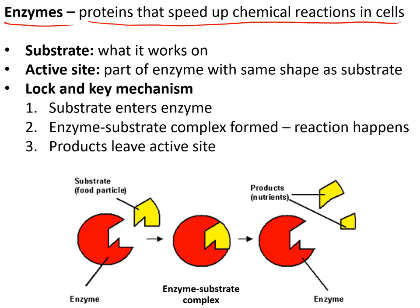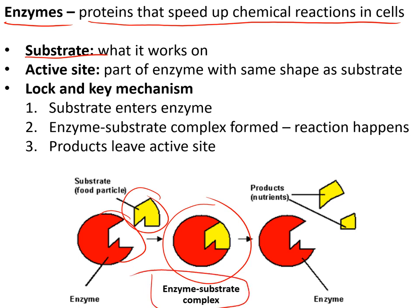Enzymes are proteins found inside every cell that speed up chemical reactions. They work on a substrate — a chemical with a specific shape that fits into part of the enzyme called the active site, forming an enzyme-substrate complex. The reaction takes place, the substrate turns into products, the products leave the active site, and the active site is ready for another substrate.